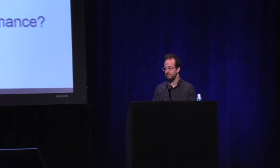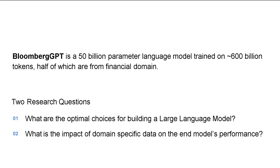Bloomberg GPT is a 50 billion parameter language model that we trained on 600 billion tokens, about half of which are in the financial domain. In the talk, I want to touch on two areas. One is: what are the optimal choices for building a large language model? And second, what was the impact of domain-specific data on the end model's performance? Both of these, I think, are interesting not just for us, but for the broader community.